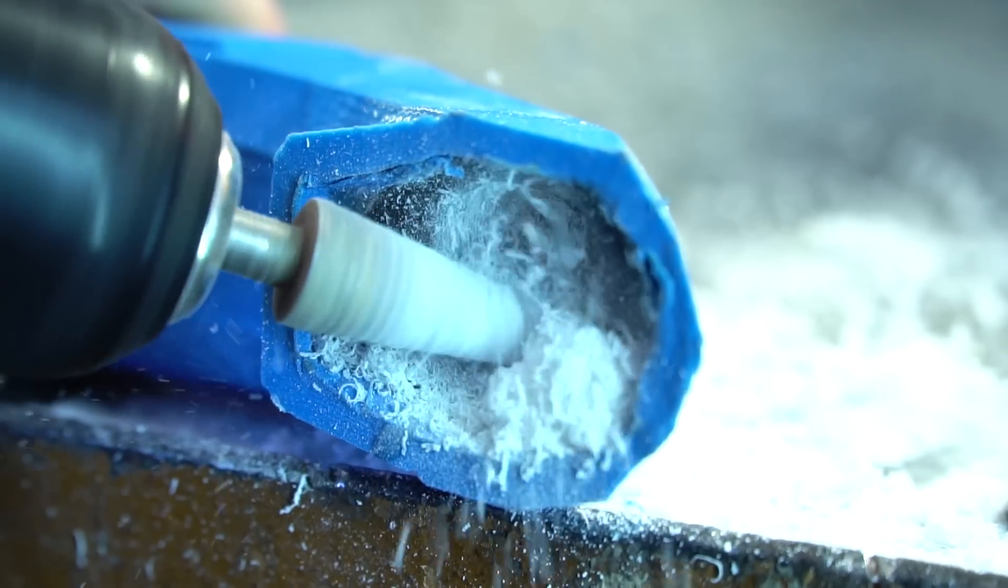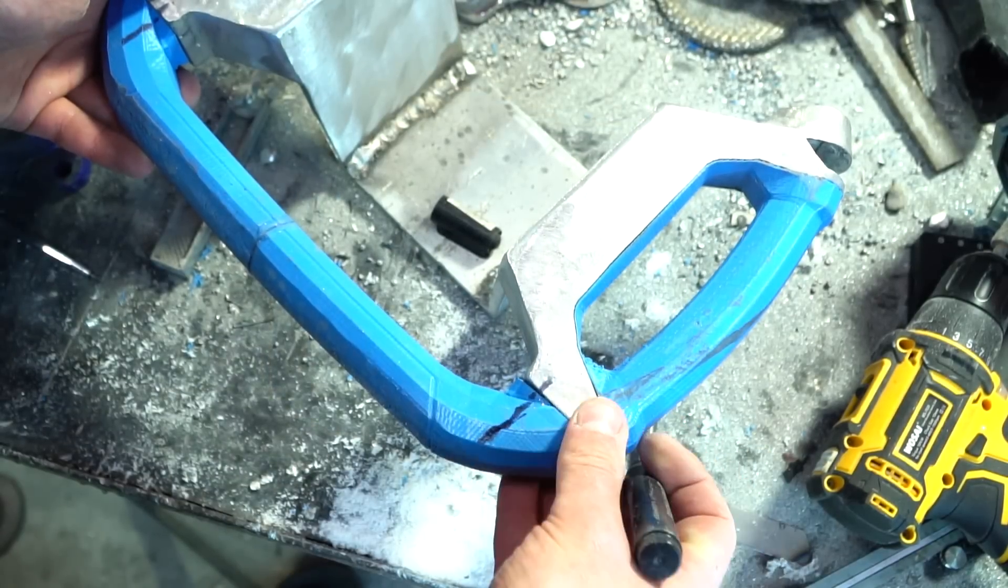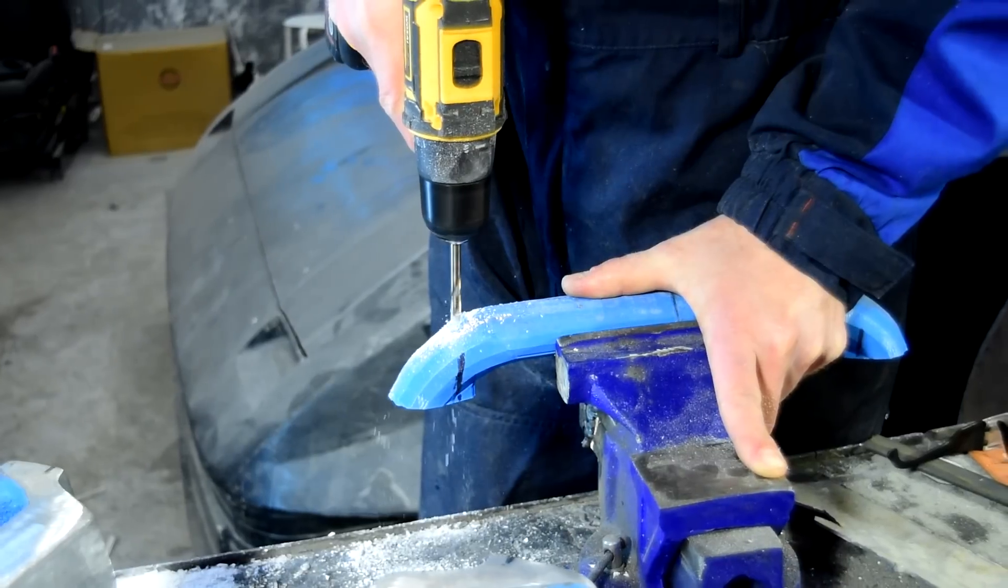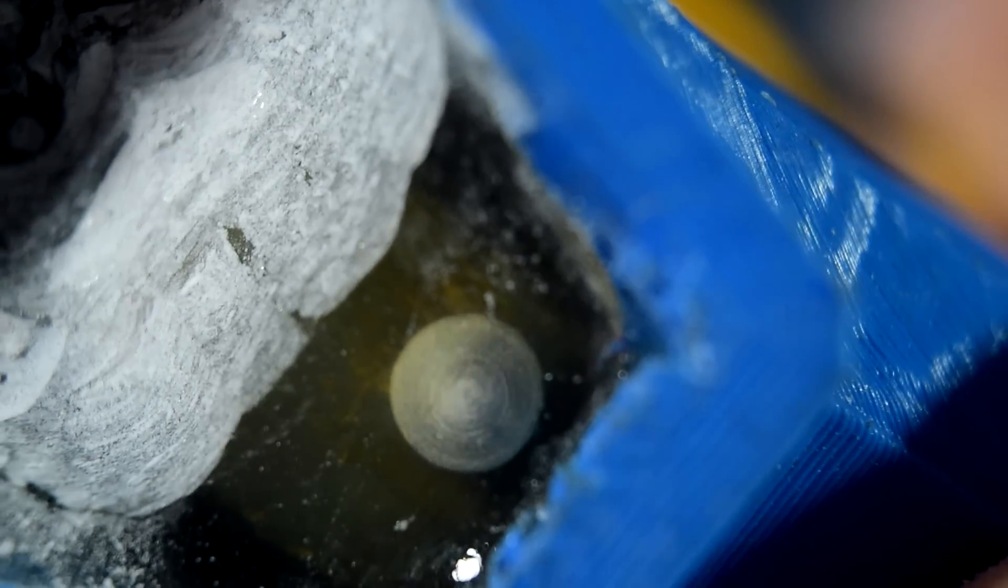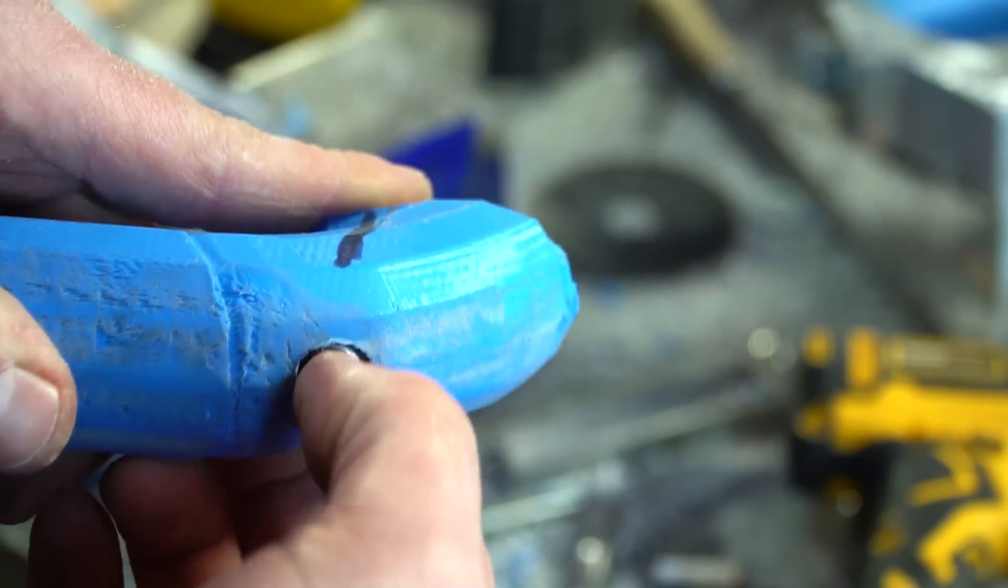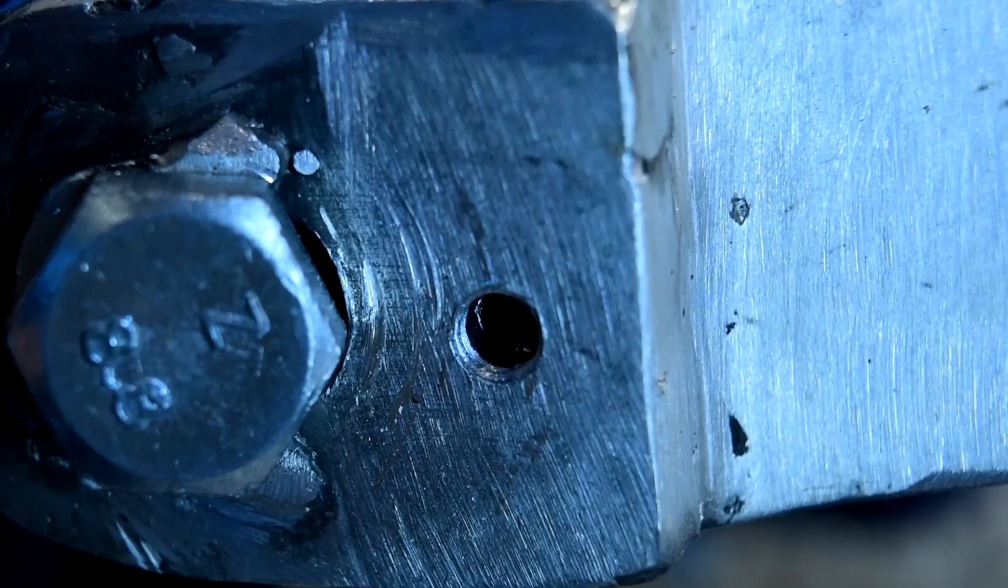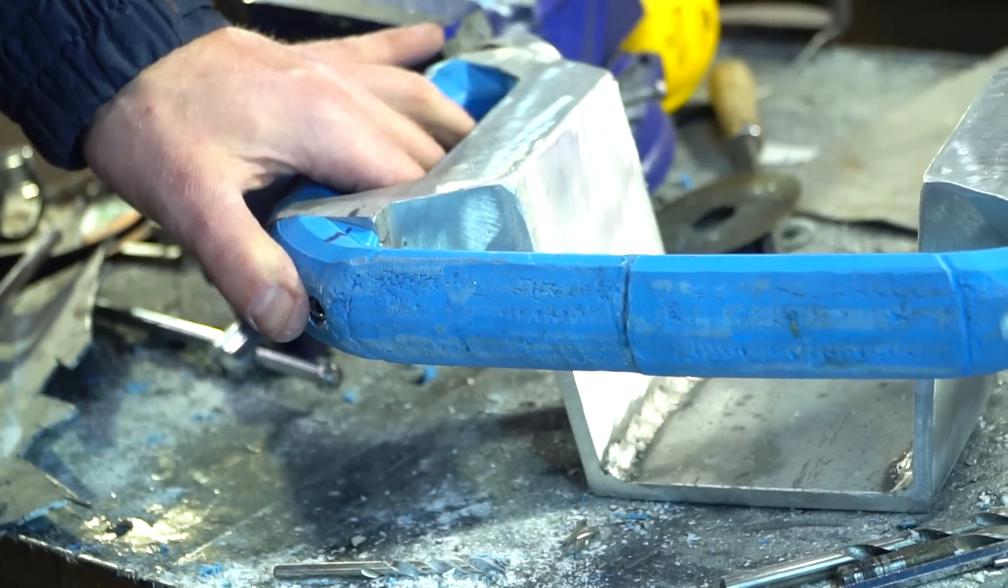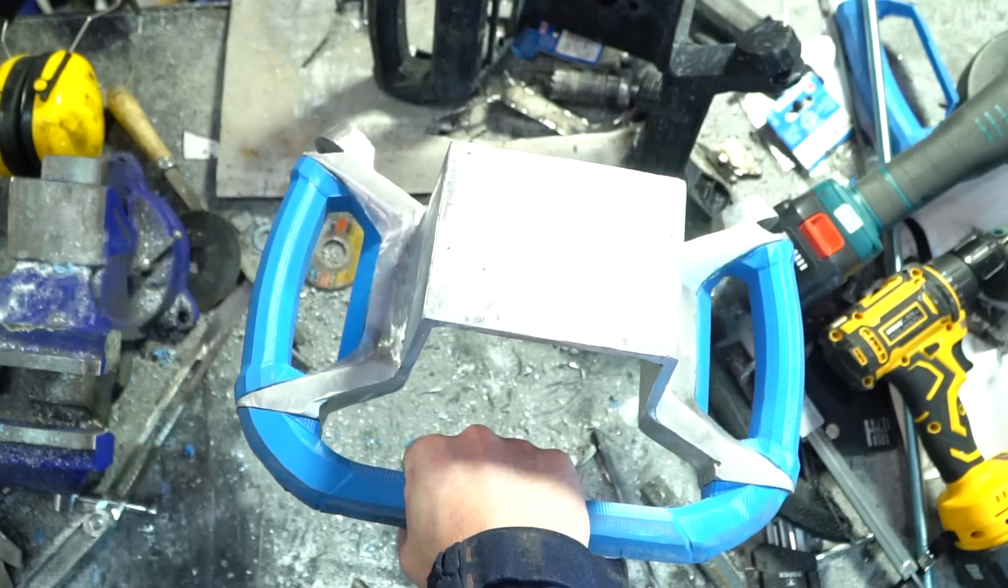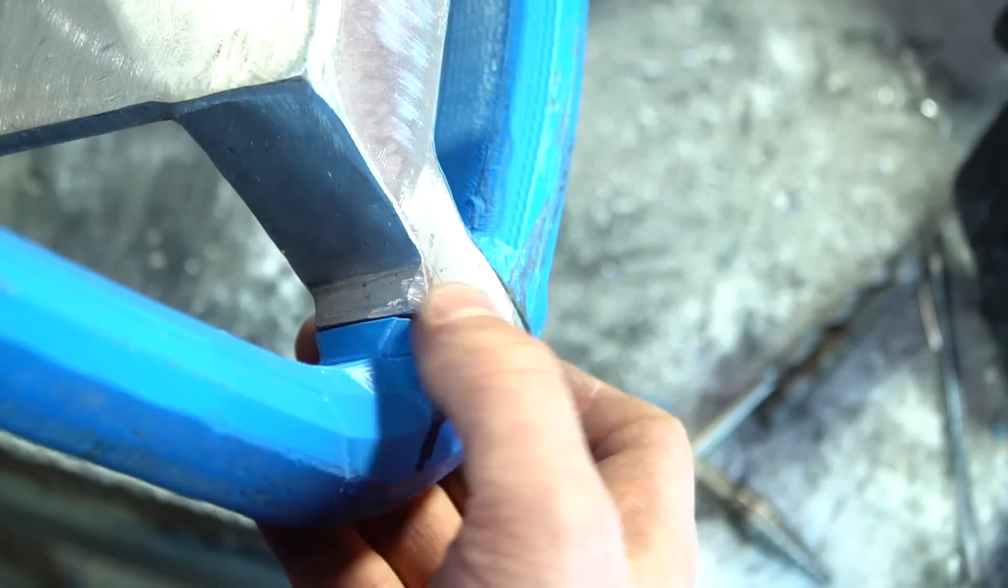I overdid it with resin and forgot about the caps of the fastening bolts. I removed the excess with a milling cutter. This detail will be attached to the basis with two screws. For this purpose I drilled a hole so that it can pass through the aluminum strip.